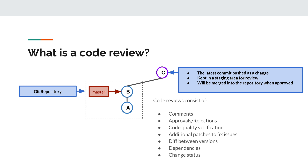Once a change is approved, the code is merged into the repository. In a code review, team members can comment, approve, reject, push additional code patches, see a diff between versions, see dependencies, and see the change status.